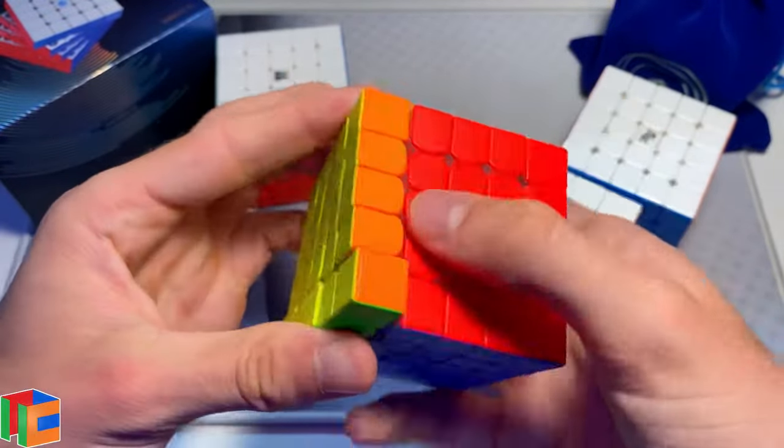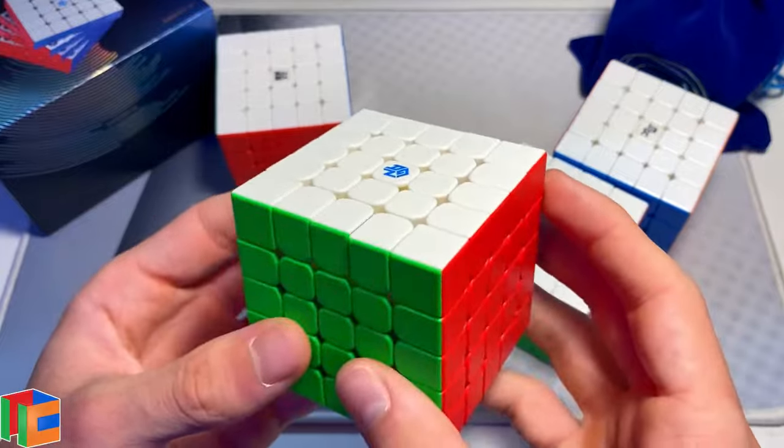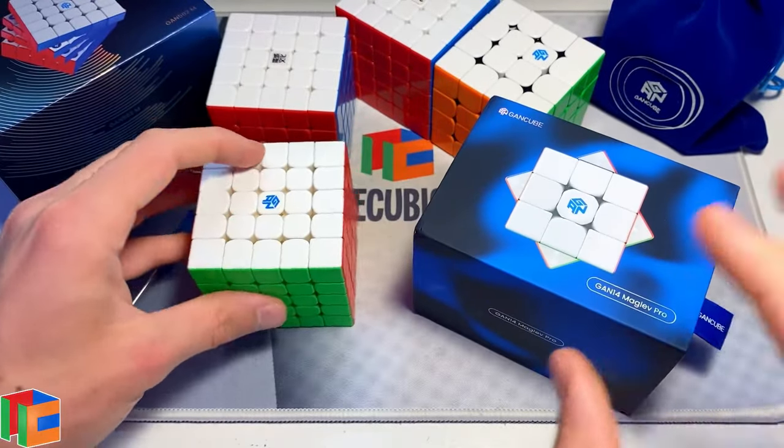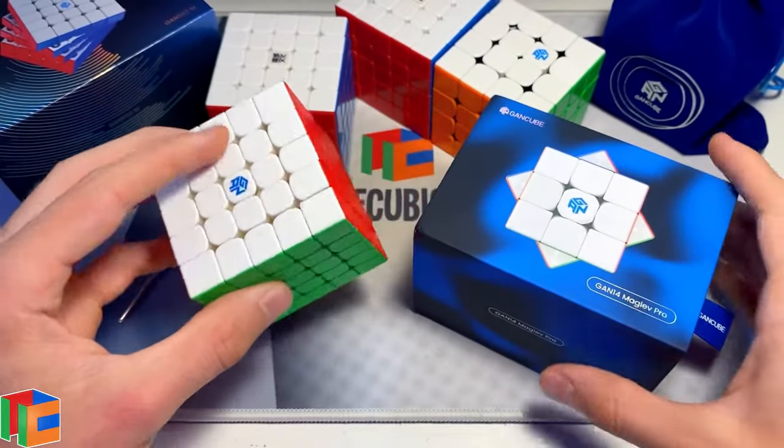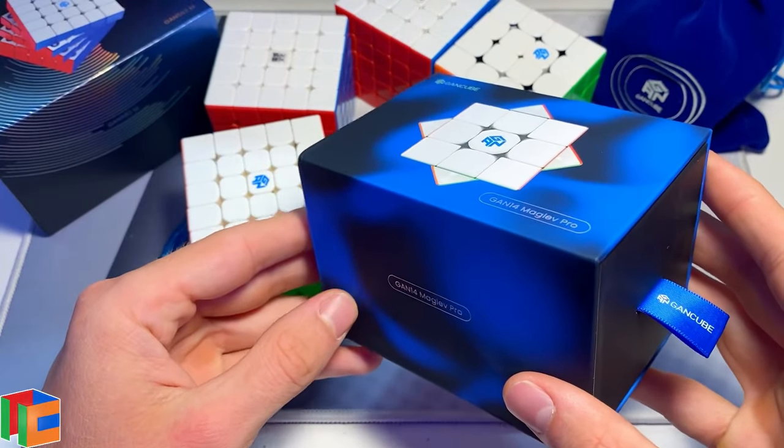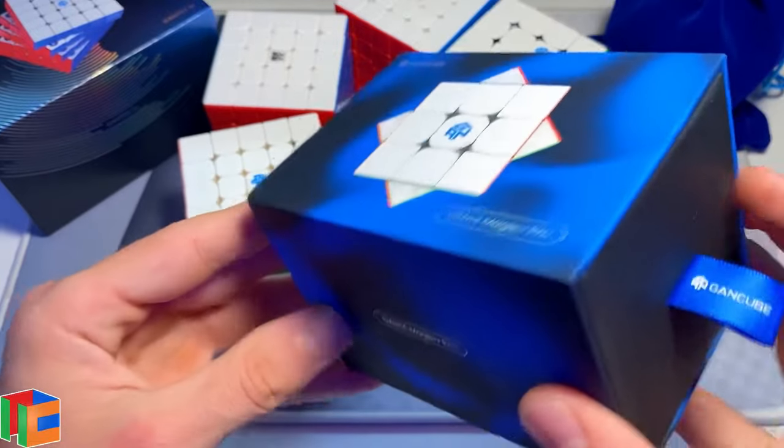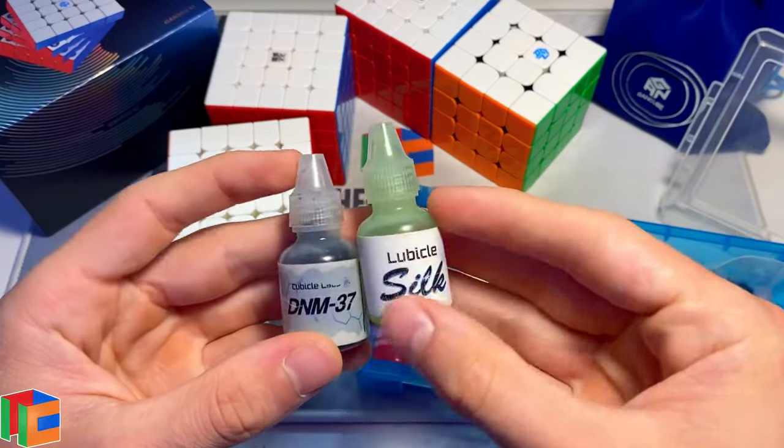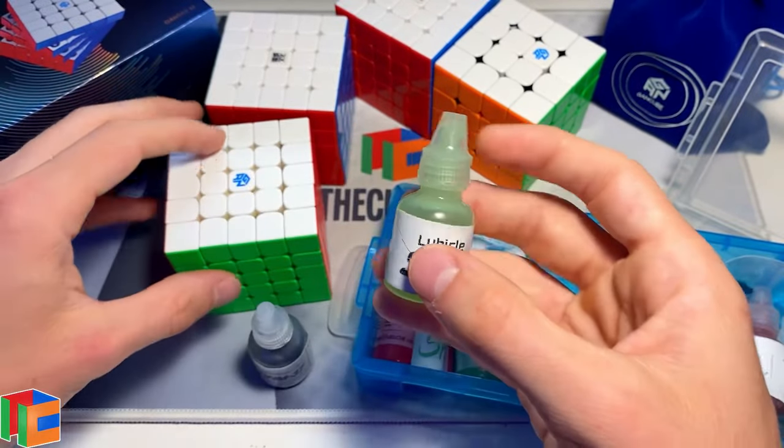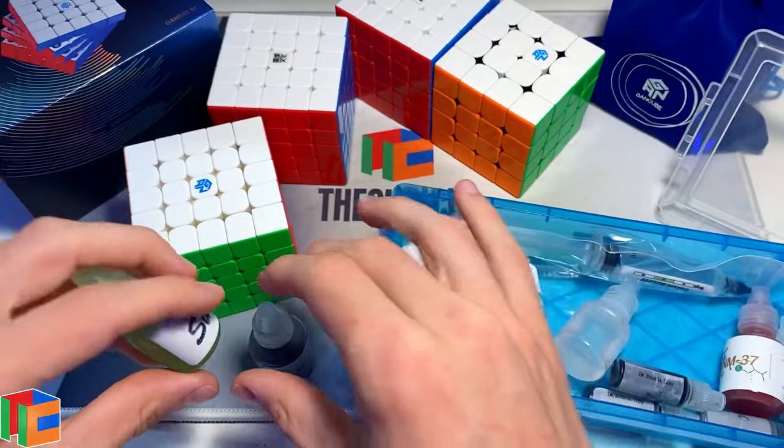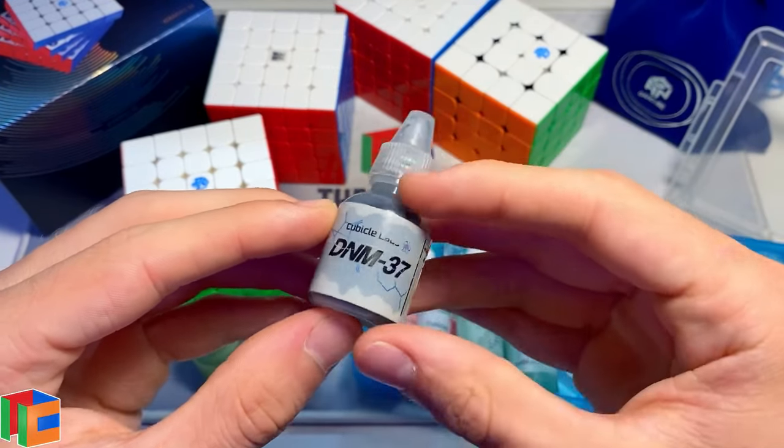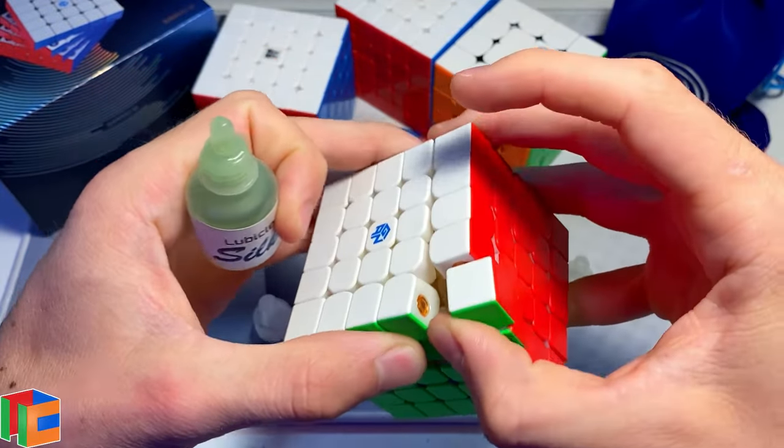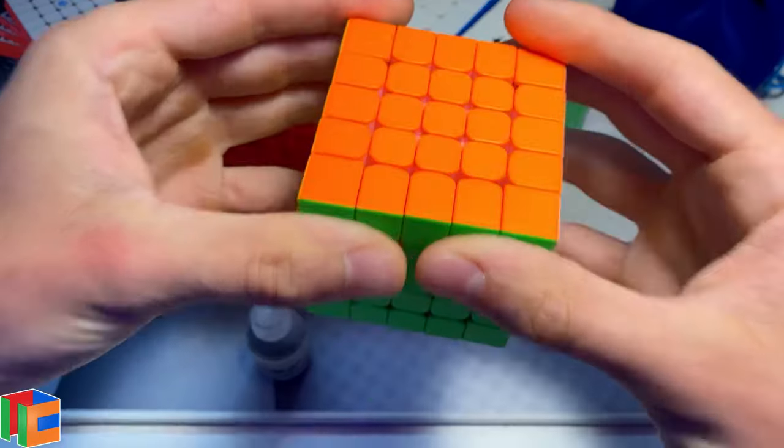I think I'm actually going to try to put some lube in this to see how it changes it. Man, it's been a while since I've opened this. Oh yeah, DNM 37. I think I usually mix that with Silk. I try to put the Silk more on the stalks and get a nice gummy feeling on the inside, while making the layers and the outer parts of the piece themselves a lot smoother and faster with the DNM 37. Can't even remember how many drops to use, let alone in a 5x5. Alright, now let's put in some DNM and make it a little faster. Whoa, right now that is very fast!